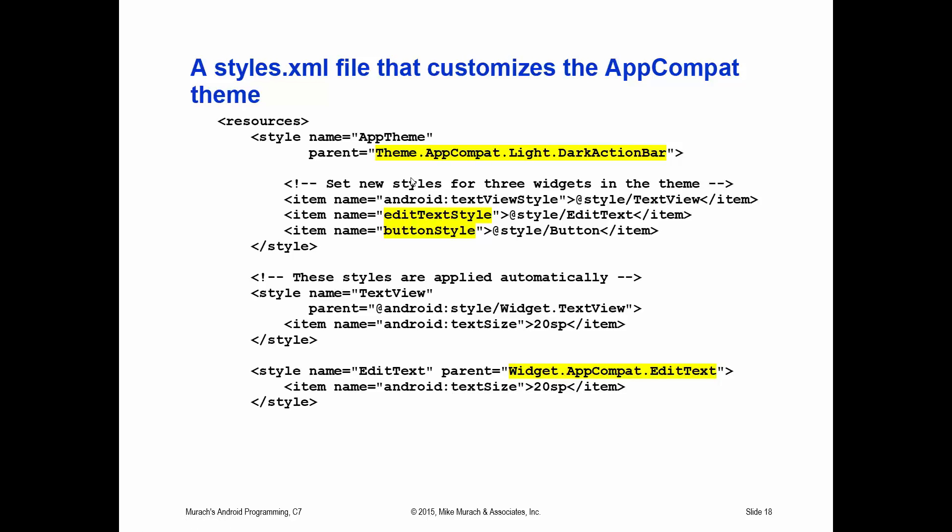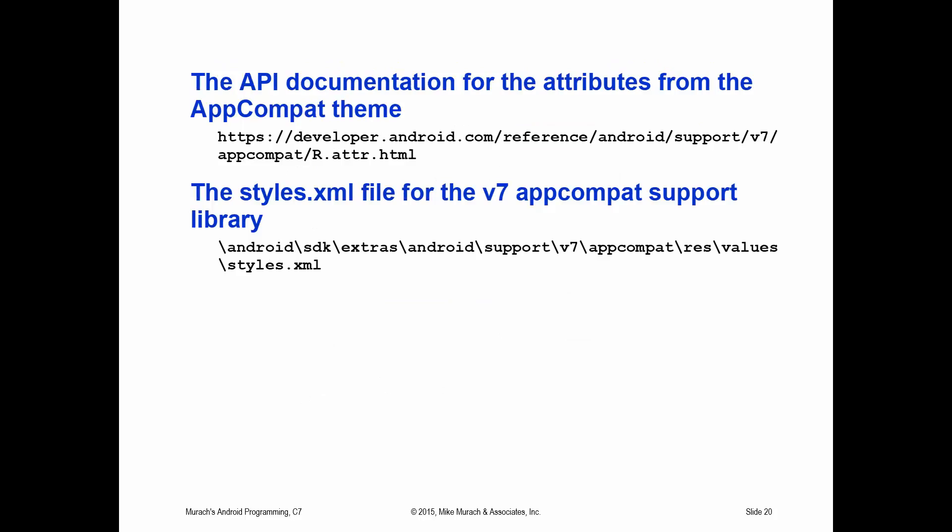Figure 7-8, shown on screen and on page 213, shows how to modify the AppCompat theme. It works pretty much like modifying a built-in theme like the Holo theme, but it's a little trickier because you need to specify whether to override a style from the AppCompat support library or a style from the Android operating system. As mentioned on the page, this oftentimes involves some trial and error. The API documentation for the AppCompat theme attributes and the styles.xml file for the v7 AppCompat support library are shown on this slide. We're going to be doing virtually nothing with this.